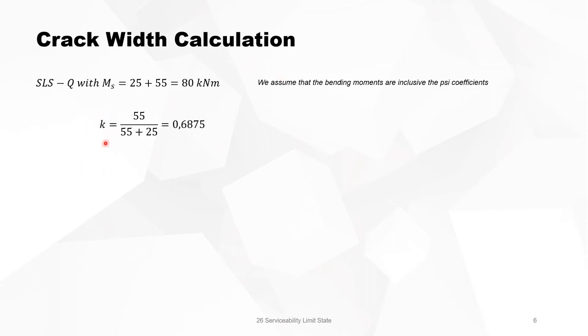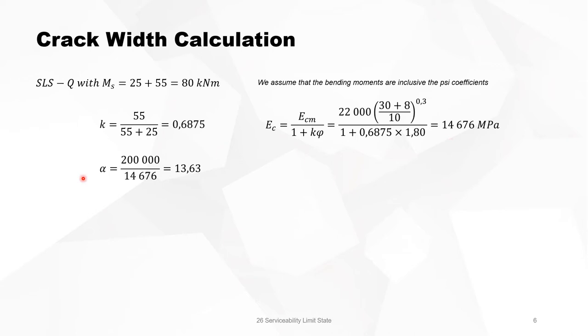We calculate the K factor, which is the effect of permanent loads divided by the effect of total loads. We calculate the modulus of elasticity. This is the formula for the modulus of elasticity of concrete. We find something around 15,000 MPa. Alpha, which is Es divided by Ec, is 13.6. We expect in SLSQ something like 15, so this is in the right order.